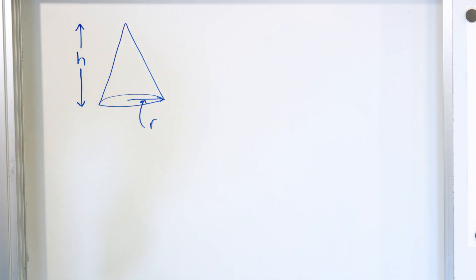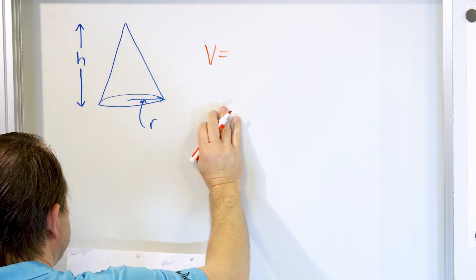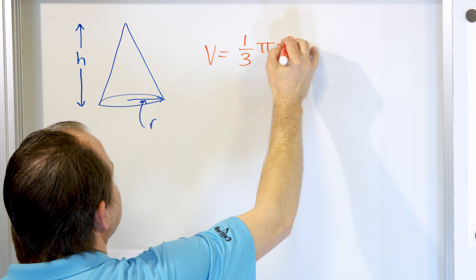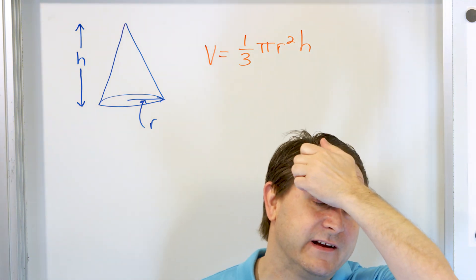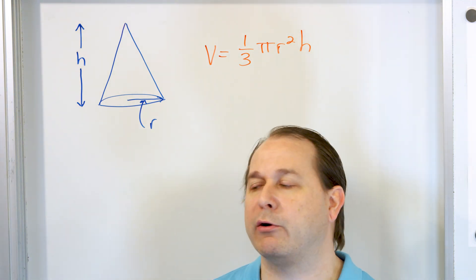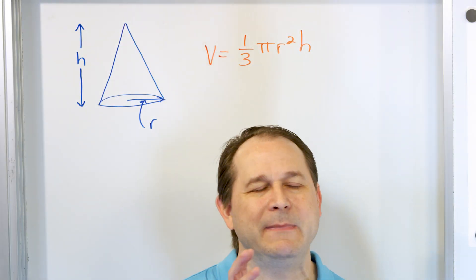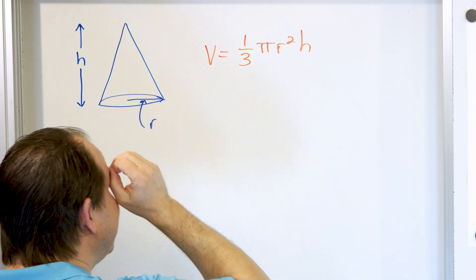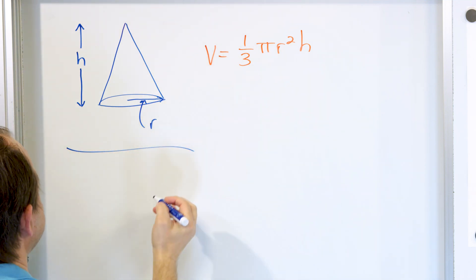Without any proof, I'm going to tell you that the volume of this cone is equal to one-third times pi times R squared times the height. It looks complicated, but let's break it down and compare this equation to what we already know the volume of a cylinder is. This formula for the volume of a cone is actually very similar to the volume of a cylinder, so let's compare these two things together.